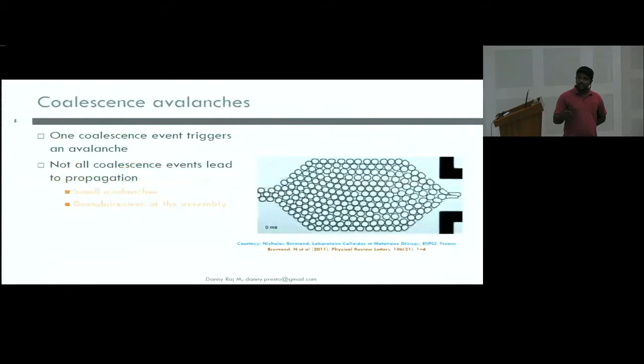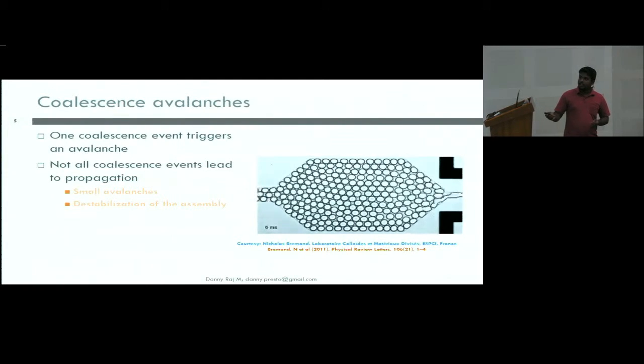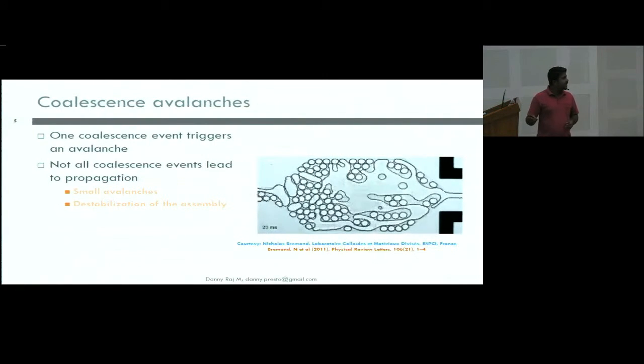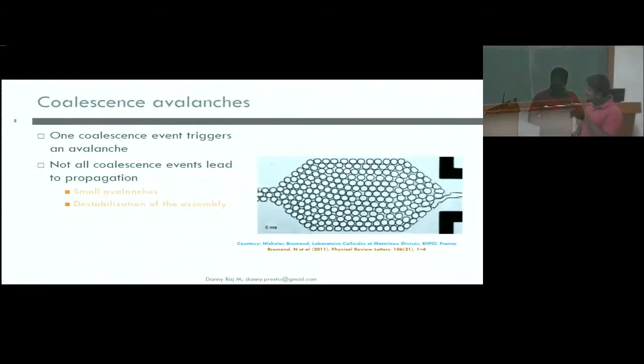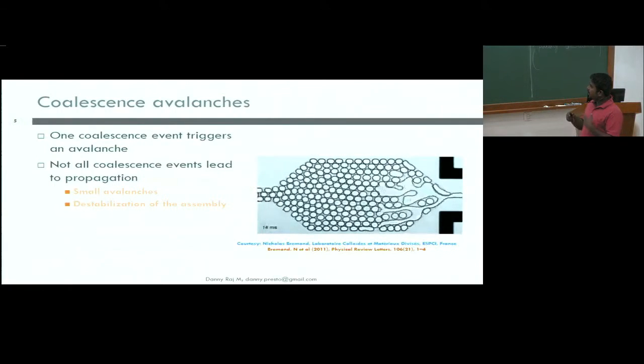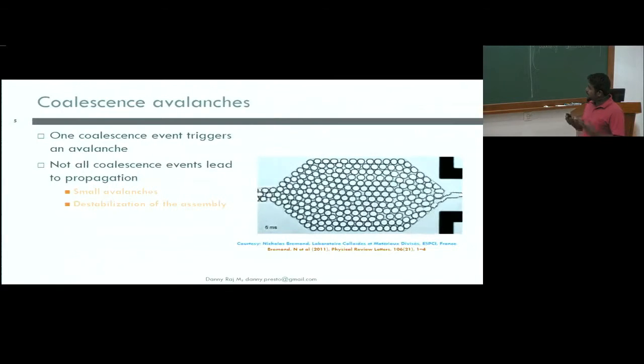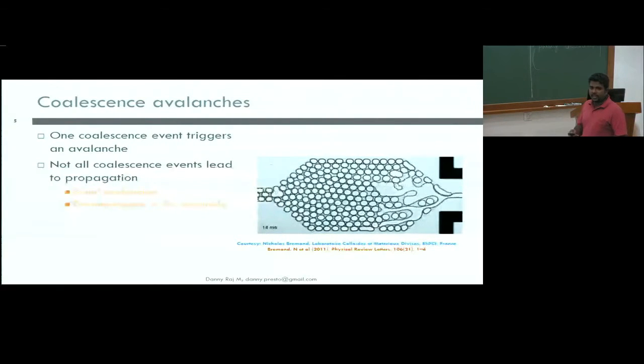Here's another example. When you operate with such a large concentration of drops in a microchannel, you can have what is called propagated coalescence, where one coalescence event triggers an avalanche of similar events, which destabilizes the entire assembly. The idea here is to understand how these drops behave in the channel, so that we can model them or design systems for any application of interest.